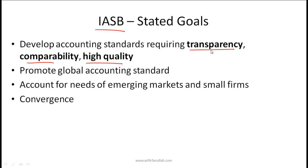Transparency means that by looking at the financial statements you need to be able to tell what is happening at the company — the information should be economically significant. Whatever is happening within a company from a financial perspective is transparently presented in the financial statements. Comparability means that information provided should allow different companies to be easily compared, and within a given company you should be able to compare financial results year over year. Obviously we also want financial reports of high quality.